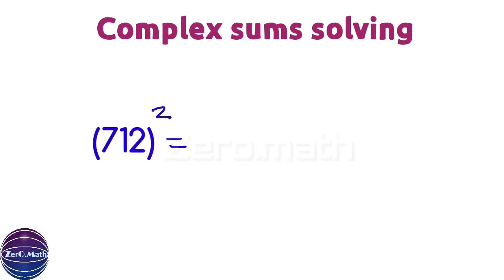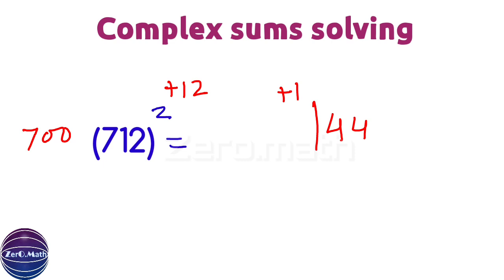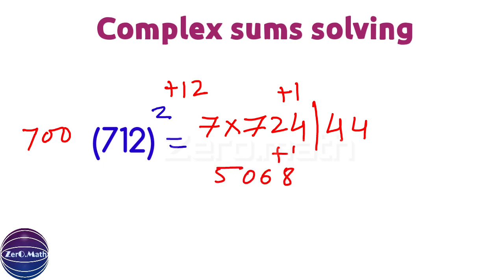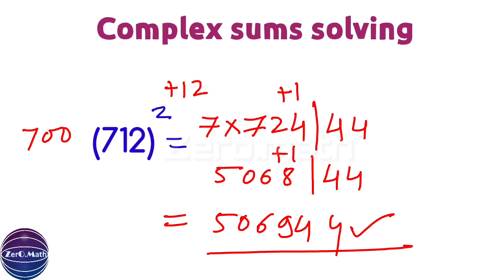Let's quickly square 712. The base is 700. The difference from base is 12. The square of 12 is 144, so we write 44 and carry 1. Now 712 plus 12 is 724, multiplied by 7 (since base 700 is 7 times 100), which gives 5068. Adding the carry of 1 gives 5069. So the answer is 506944.